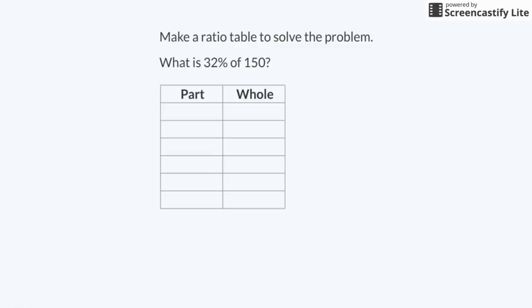It would be hard to guess 32% of 150, so I'm going to have to use what I know to solve the problem another way. I know that 32% is 32 out of 100. I can use this as a starting point. 32 is the part and 100 is the whole. I write these in the table.